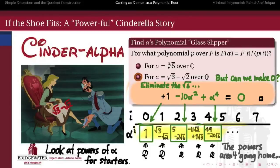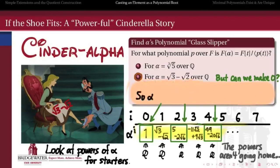And so now I get a polynomial, 1 minus 10 alpha squared plus alpha to the fourth, that comes out to 0. And so we've now cast alpha as the root, a root at least, of the polynomial t to the fourth minus 10t squared plus 1. We don't yet know whether that's irreducible, but for now let's just be satisfied that we've found some polynomial of which this alpha is a root.